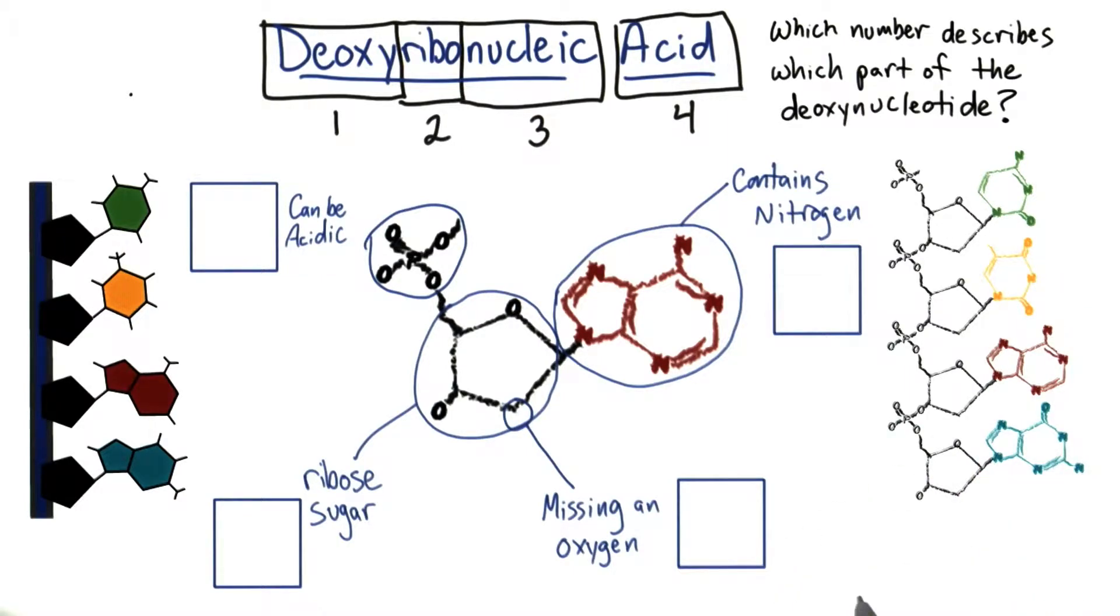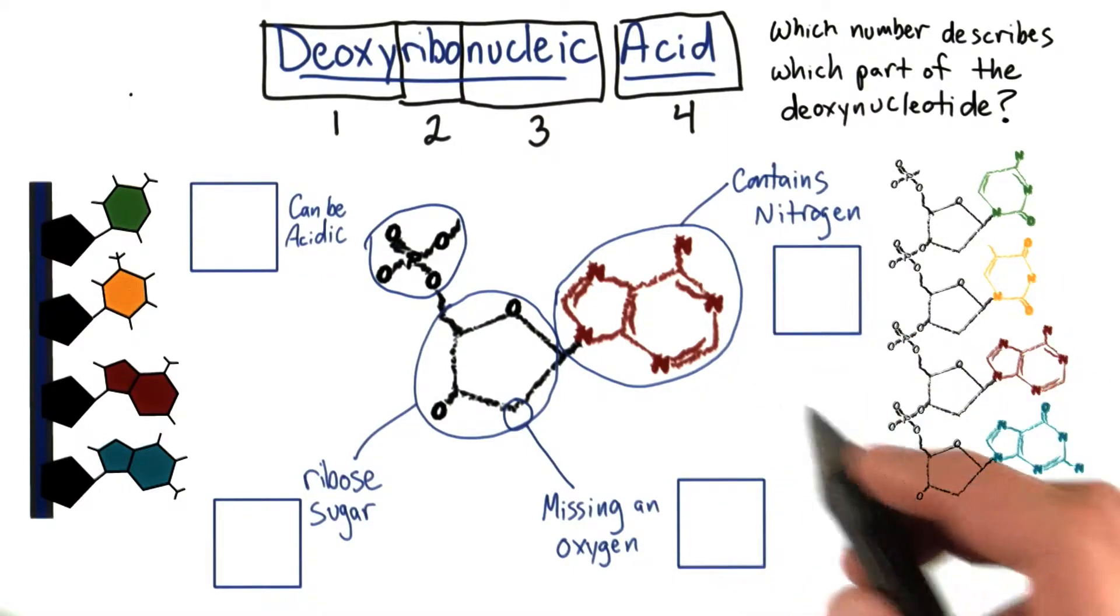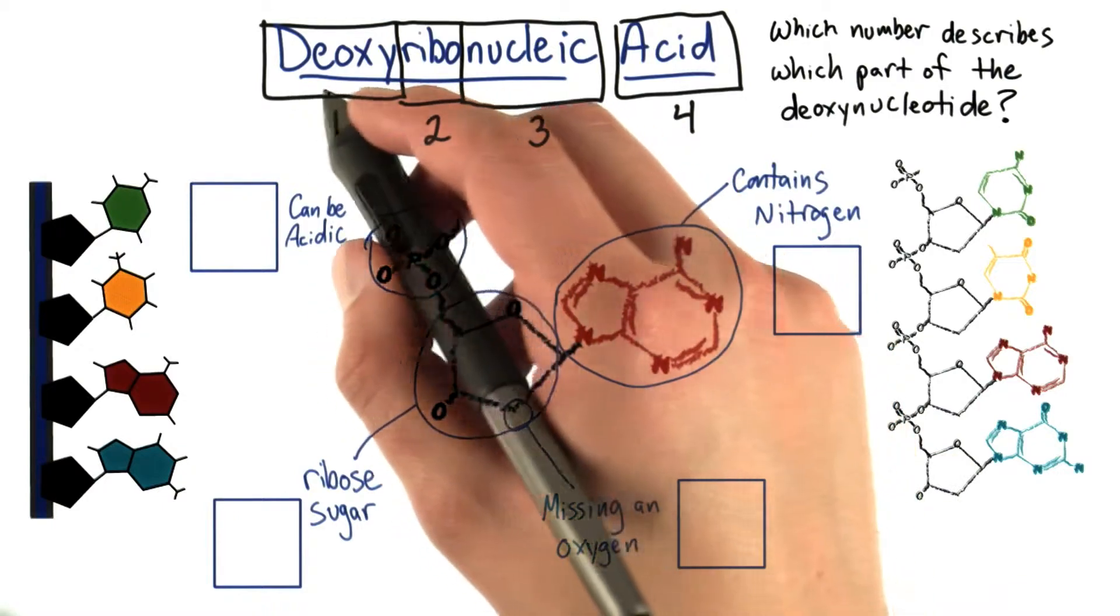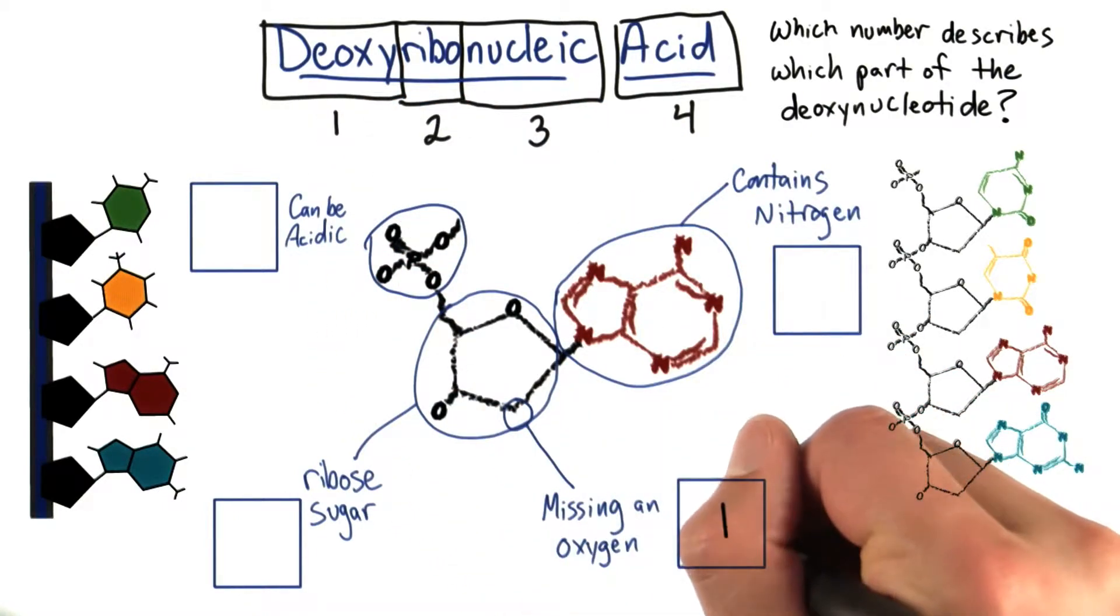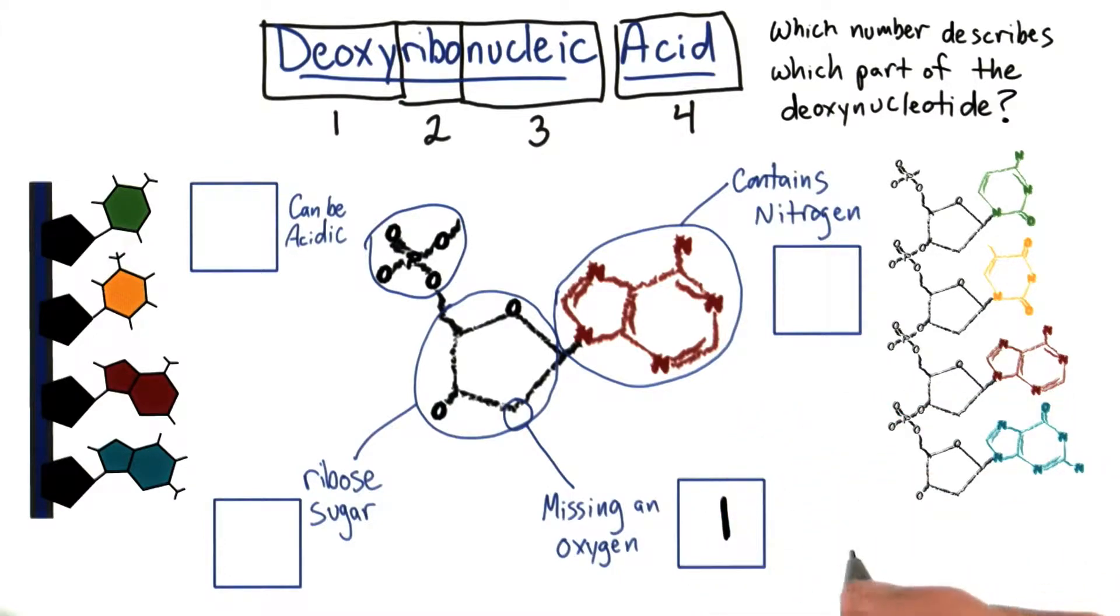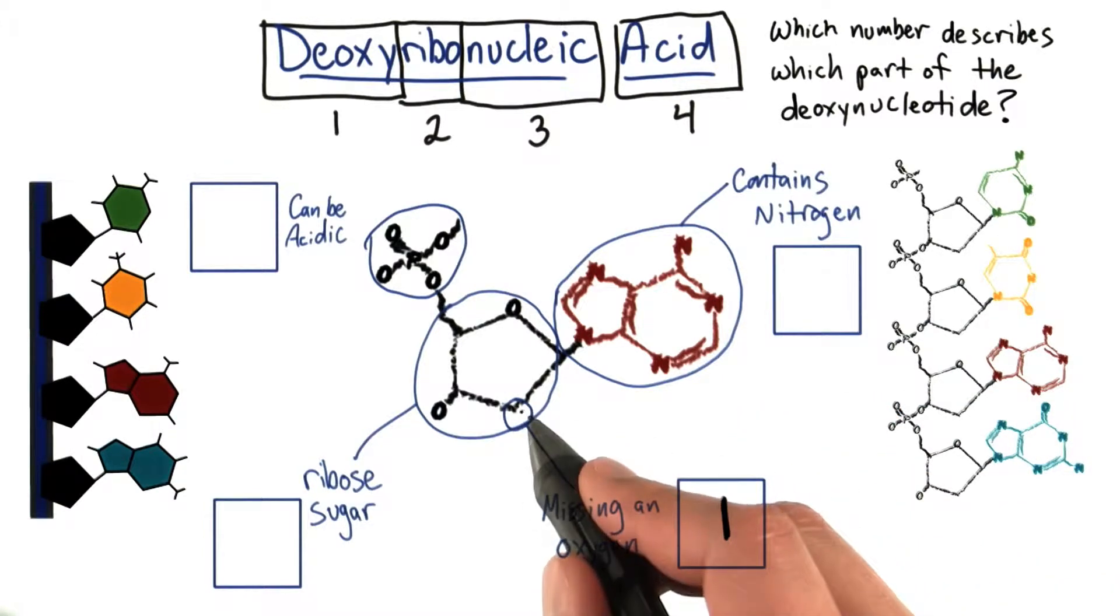Okay, hopefully you didn't find that too hard. Let's take the name in order. Deoxy here, deoxy, what do you think that means? It's probably missing an oxygen. So, the deoxy part of the name for DNA describes this part of the chemistry.